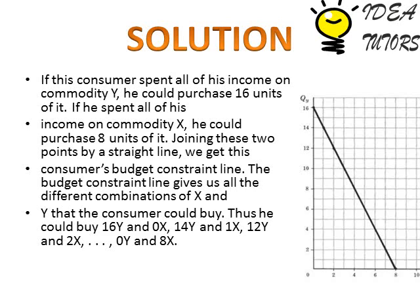To begin, we will find the horizontal and vertical intercepts. To get the vertical intercept — the Y-axis intercept — we ask what happens if the consumer spends all of their income on commodity Y. They could purchase 16 units, because the intercept is calculated by dividing income by the per-unit cost on the Y-axis: $16 divided by $1 equals 16, which is the Y-axis intercept.